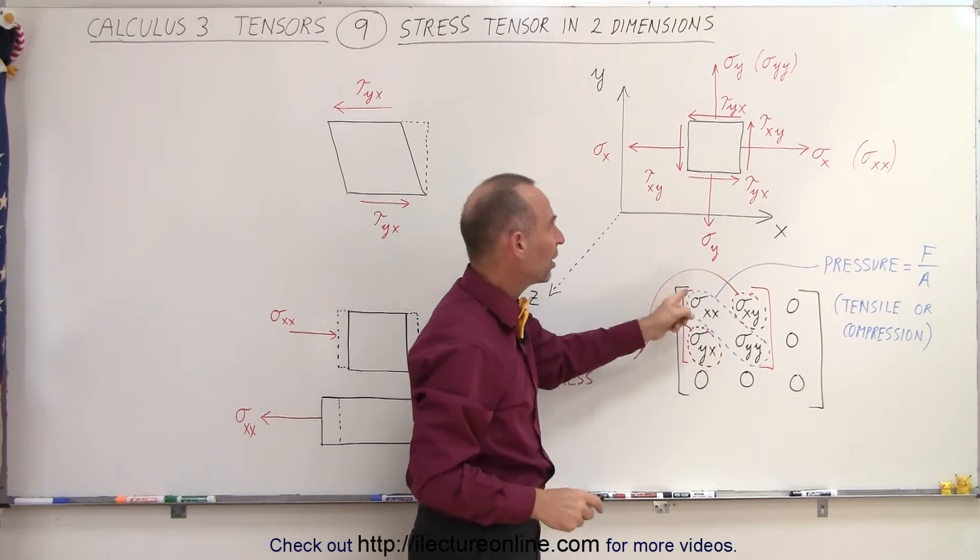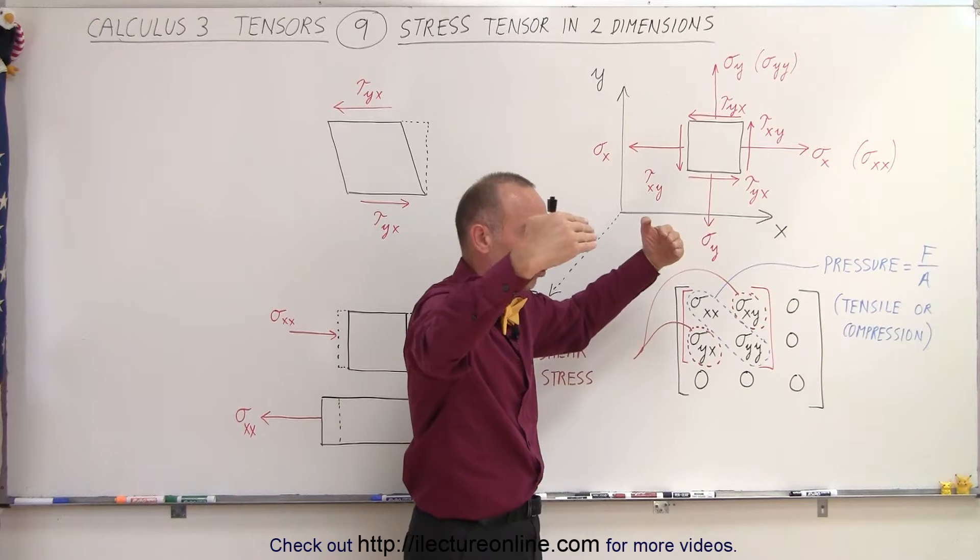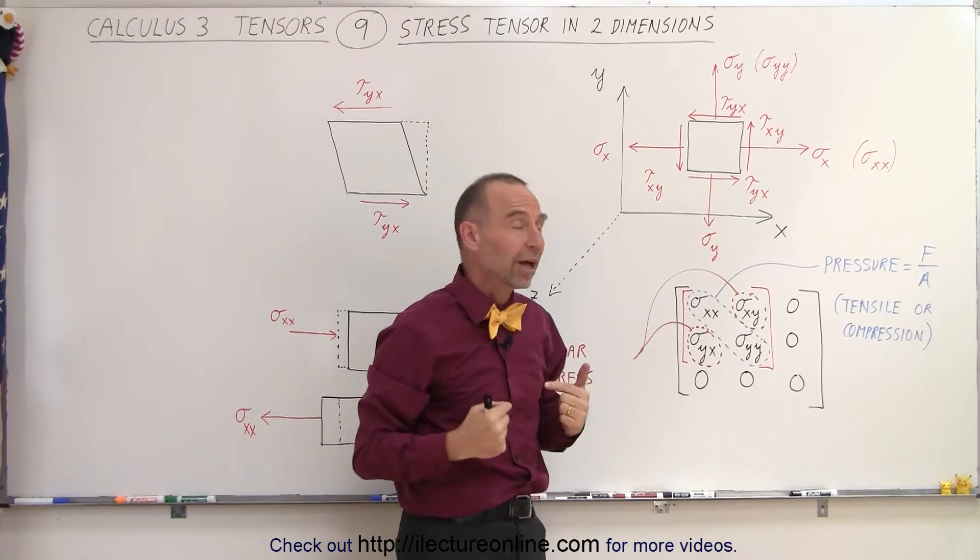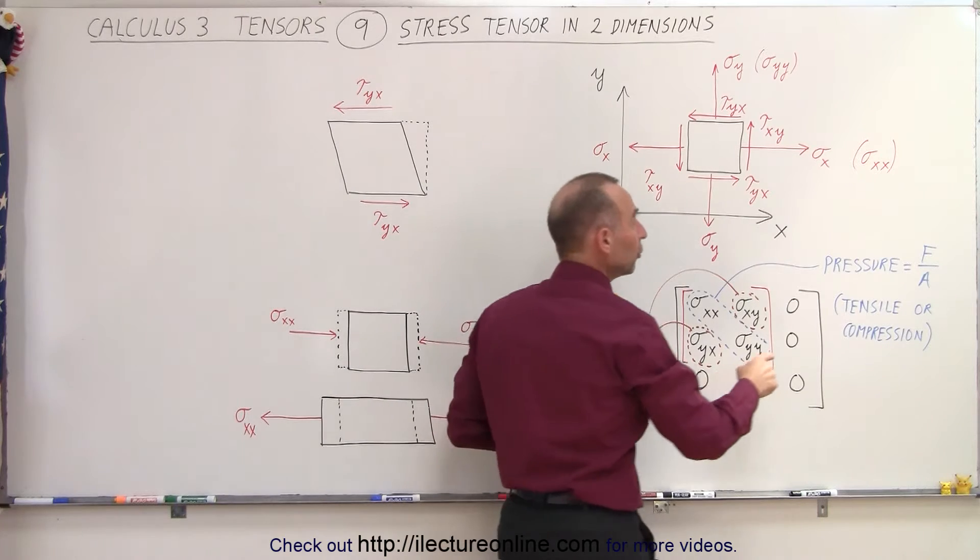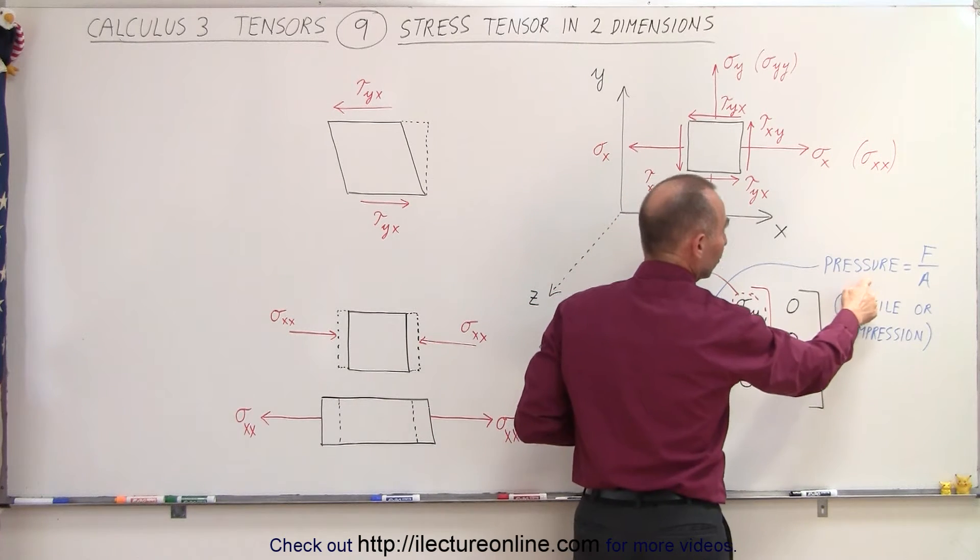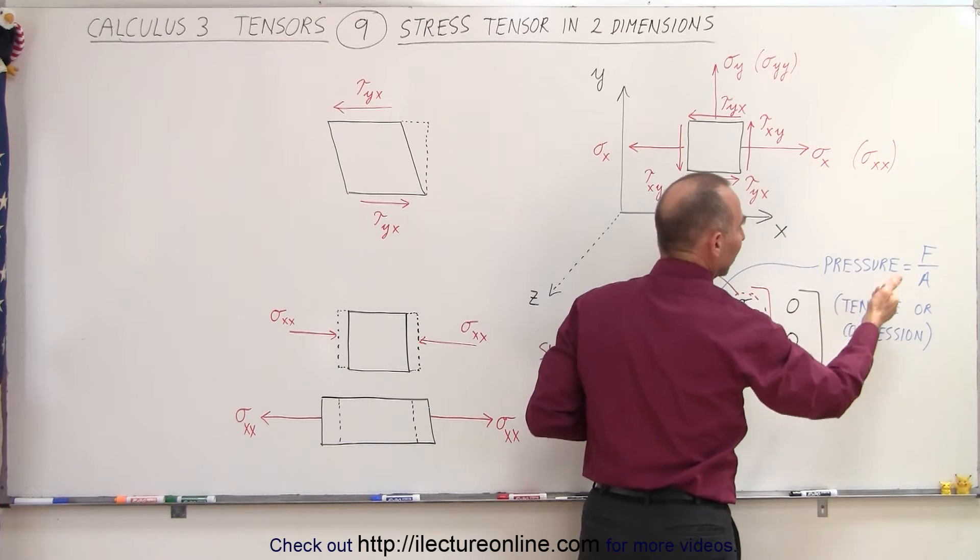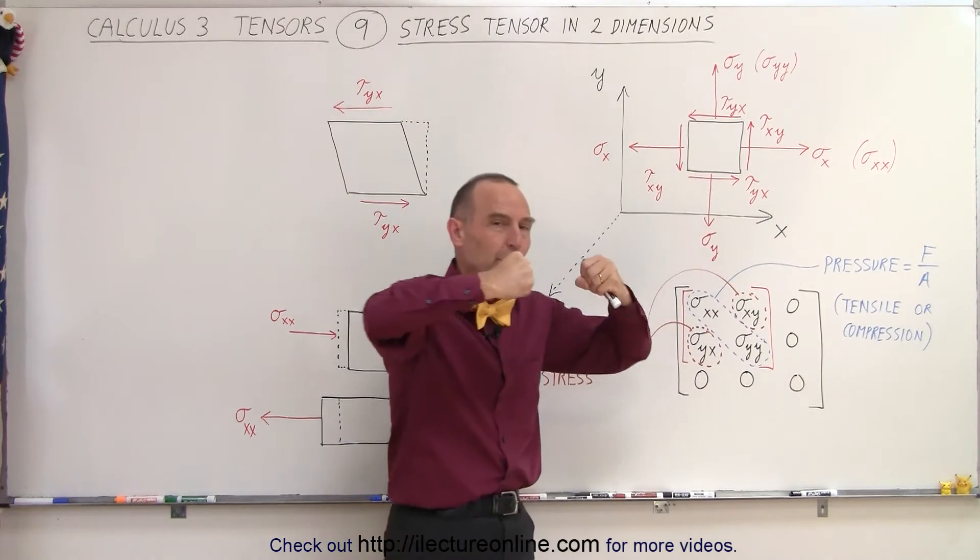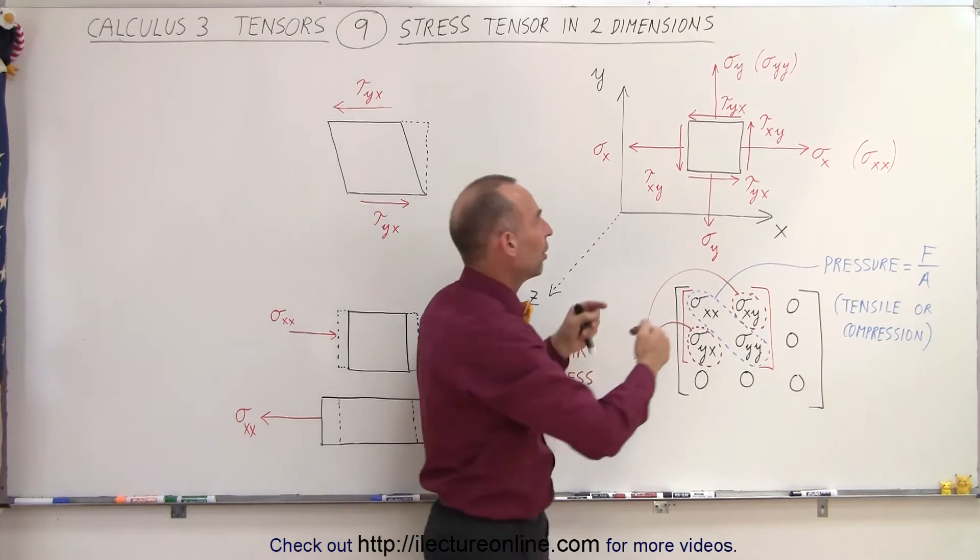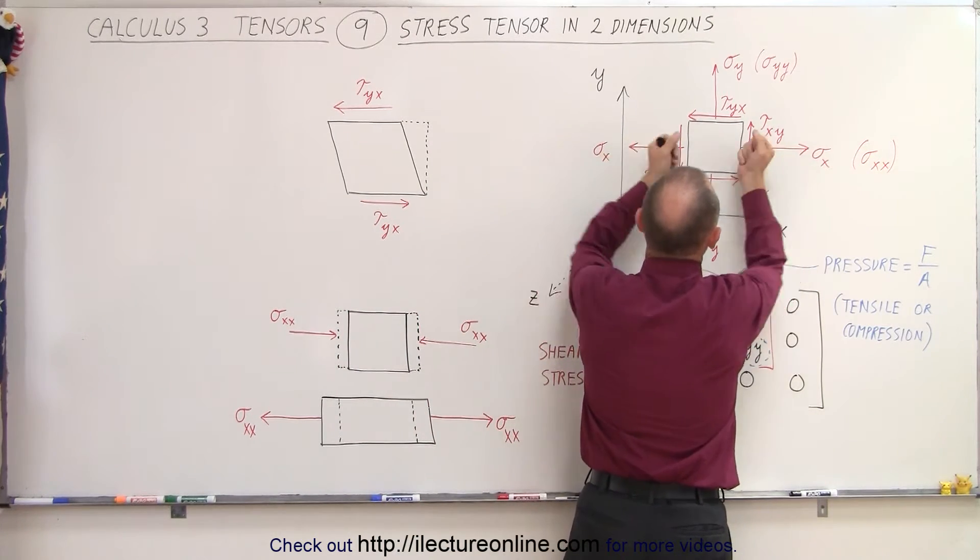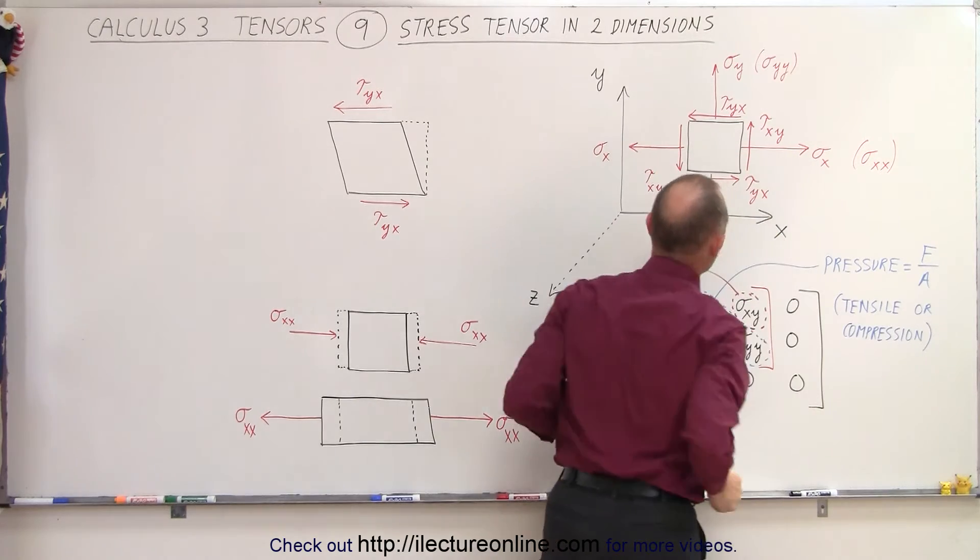The diagonal components represent forces acting towards or away from the sides, perpendicular to those sides. We call those pressure forces - pressure meaning force divided by area. They can be tensile or compression. Tensile means pulling them apart, compression means pushing them together, analogous to forces acting towards or away from this square.